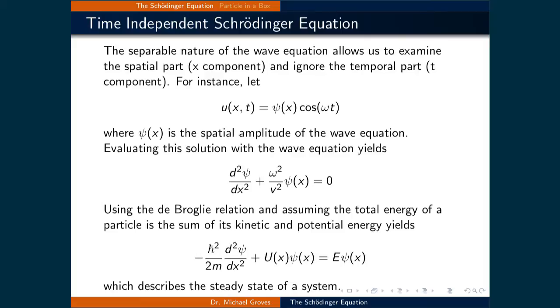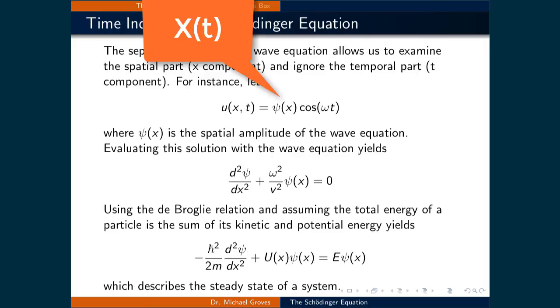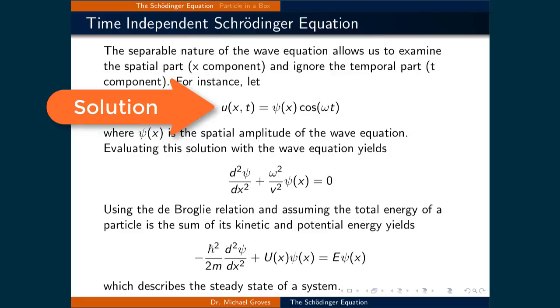At this point, however, we don't know what X(x) is, but instead of writing it as a capital X, let's just write it as a psi(x). Therefore, the solution to the wave equation u(x,t) is equal to psi(x) times cosine omega t.